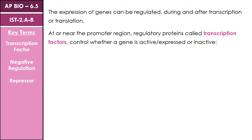The expression of certain genes can be regulated at a variety of different levels, including pre- and post-transcription and pre- and post-translation. We're going to focus here on pre-transcription type of regulation, which involves those regulatory sequences located at or near our promoter region on the gene sequence. Regulatory proteins may bind to these regulatory sequences — we refer to these as transcription factors — and they're able to control whether a gene is active or expressed, or inactive and not expressed.